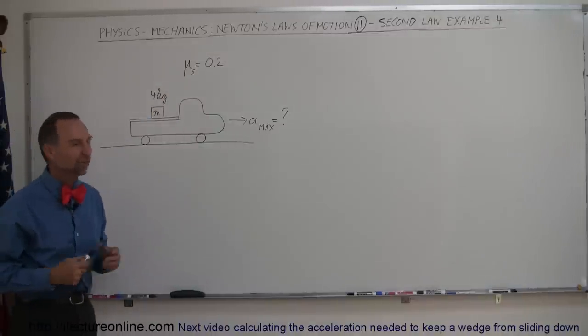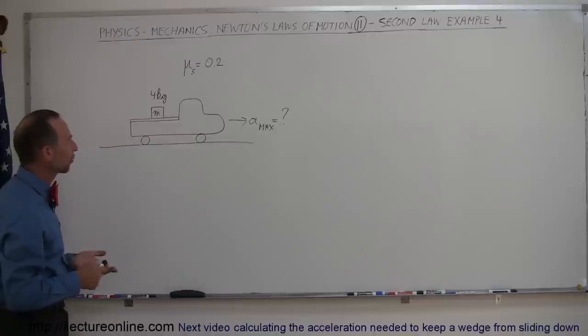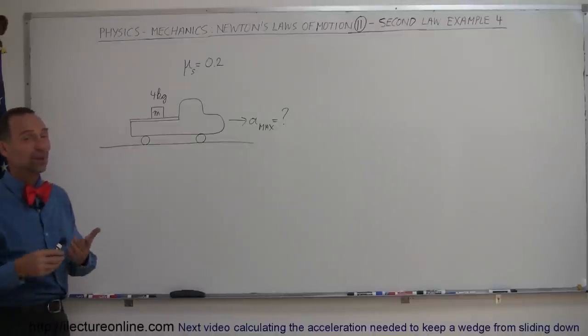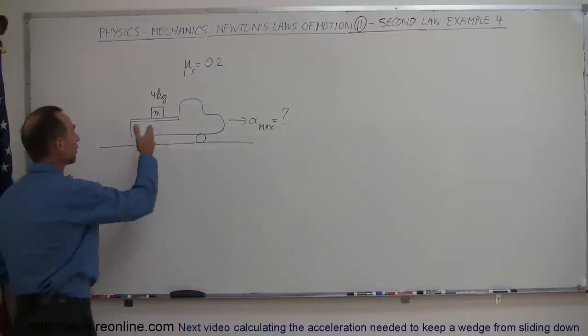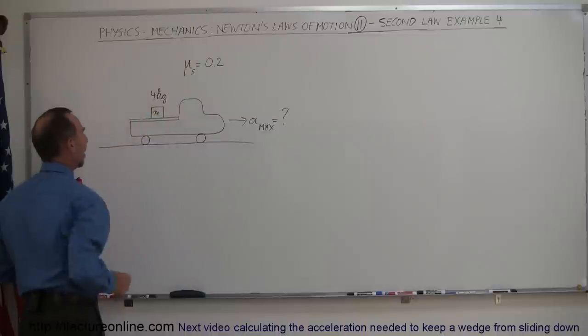Let's say the coefficient of static friction is 0.2, the mass is 4 kilograms. What is the maximum acceleration this truck can have so that the box will not slide off the bed of the truck?